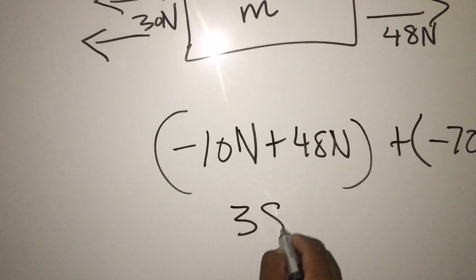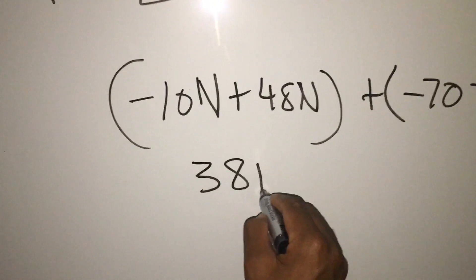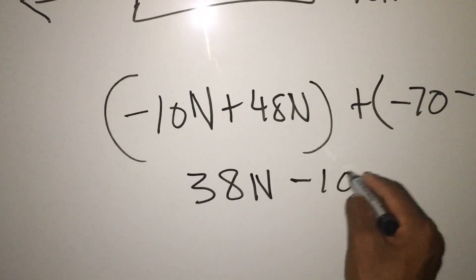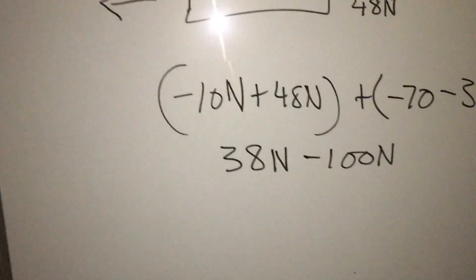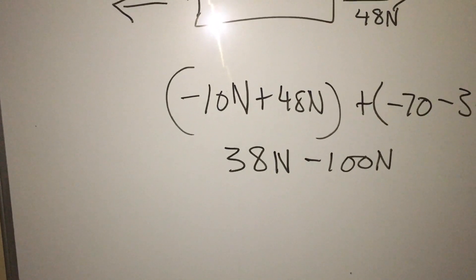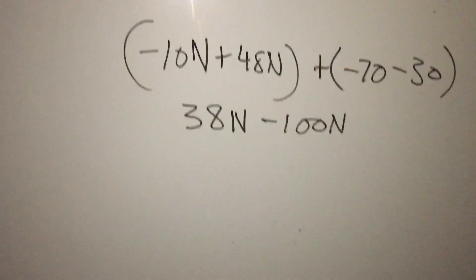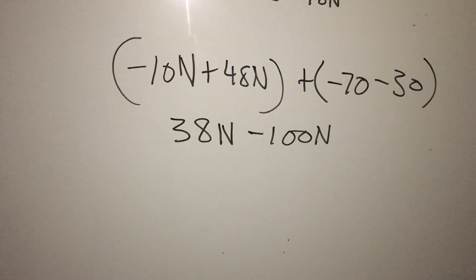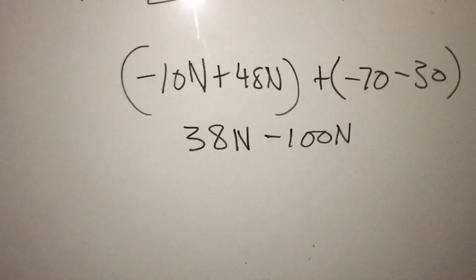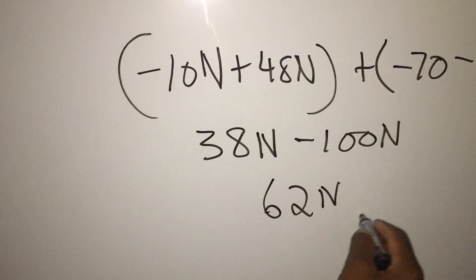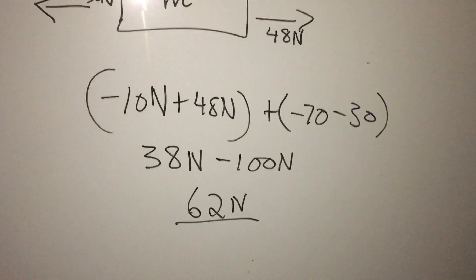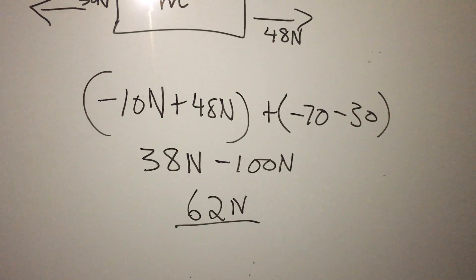Minus 70 minus 30. That's minus 100 newtons. So what is 38 minus 100? That's supposed to be negative 62 newtons. Can you see how we did it?